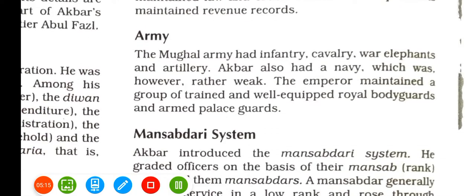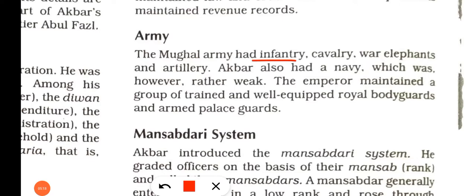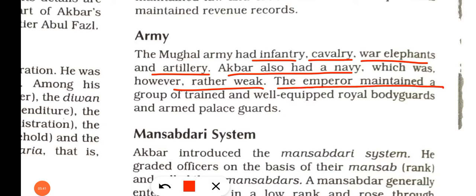Regarding the Mughal army, it consisted of infantry, cavalry, and elephants. The emperor maintained well-trained troops, including trained members who served as royal bodyguards.